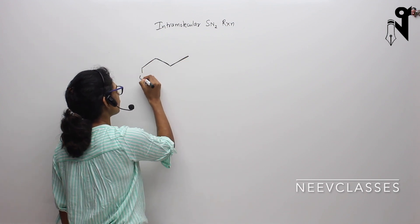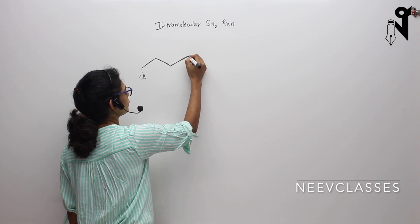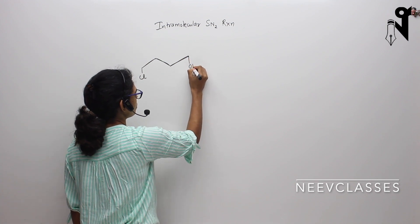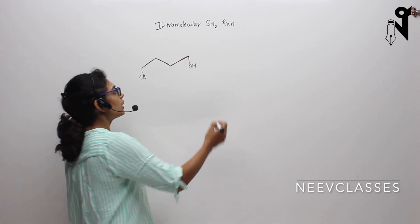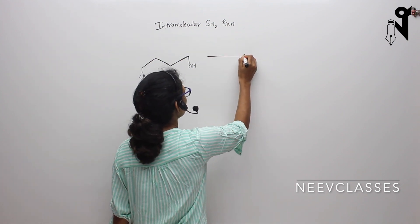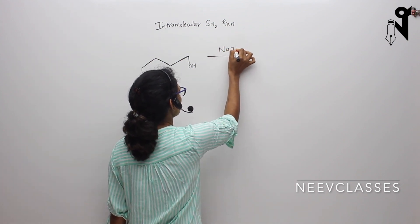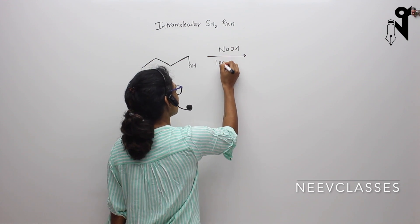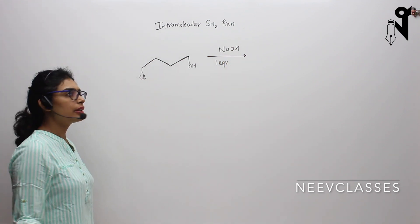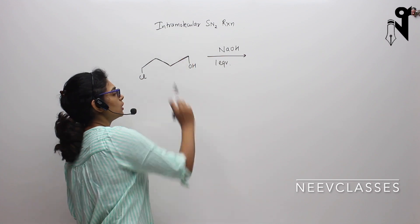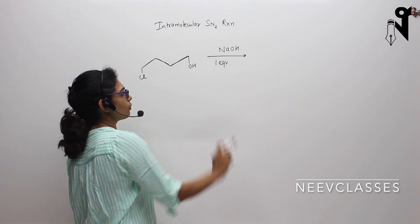I have a chlorine attached over here and I have an OH over here. Now let's say I have taken NaOH in the solution which is exactly one equivalent, to make sure that it just reacts with one mole of this. We don't have excess of NaOH.